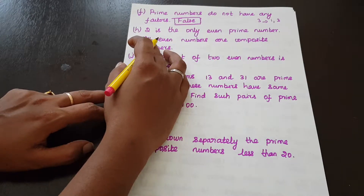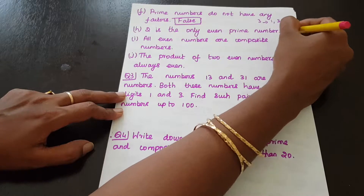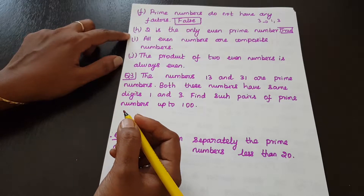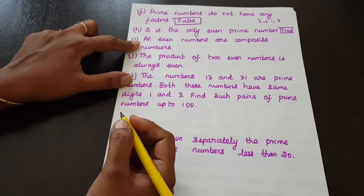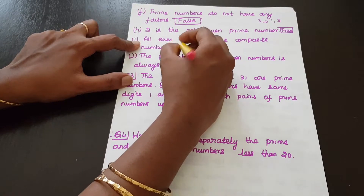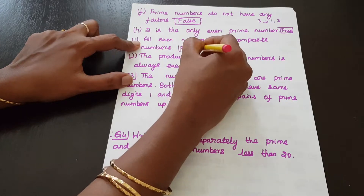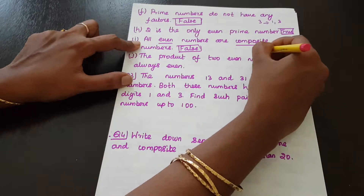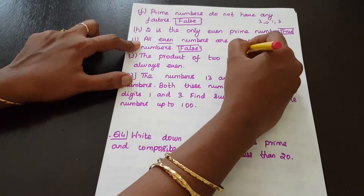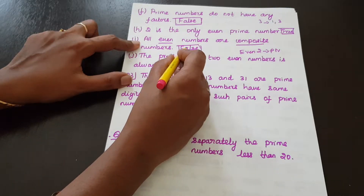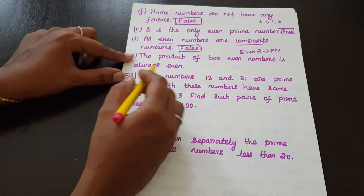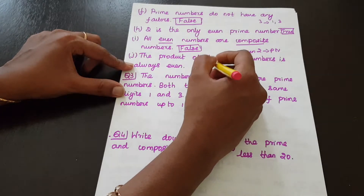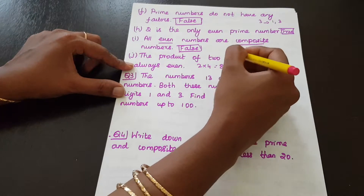Next: 2 is the only even prime number — true, because 2 is a prime number and it is even. All even numbers are composite numbers — false, because 2 is a prime number. The product of 2 even numbers is always even — for example 2 into 4 equals 8 — so that statement is true.